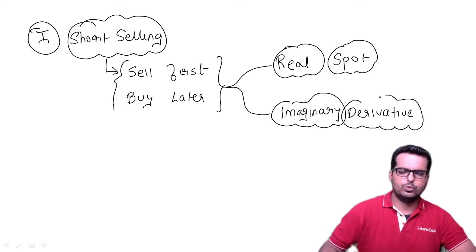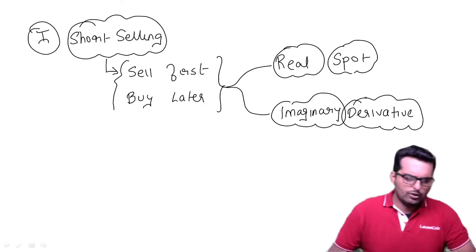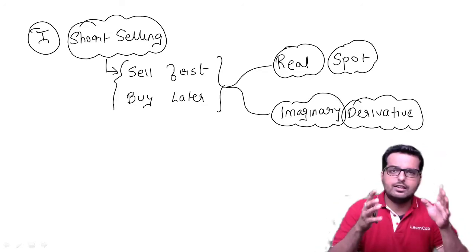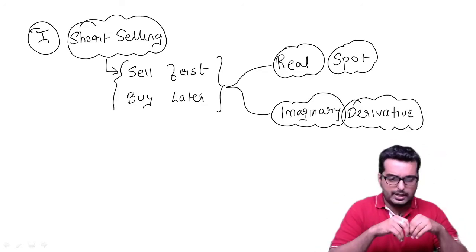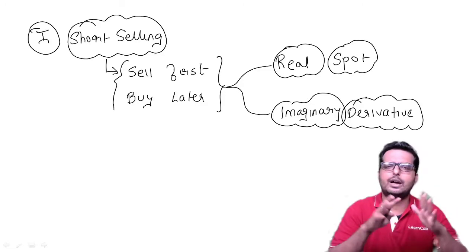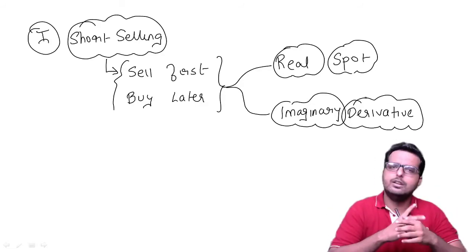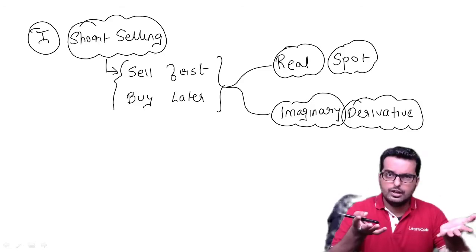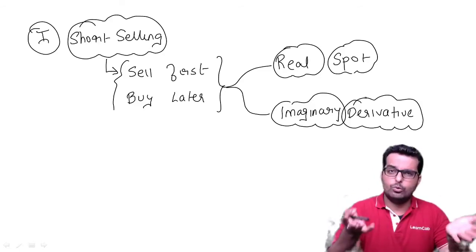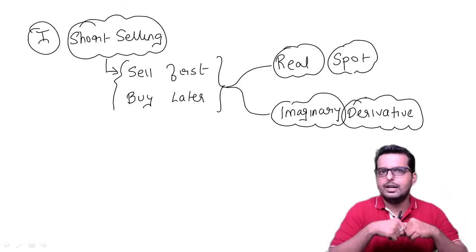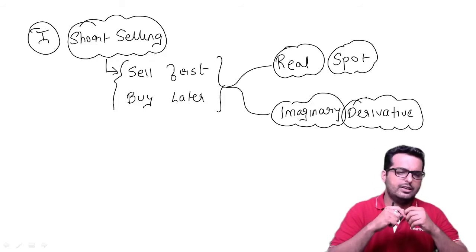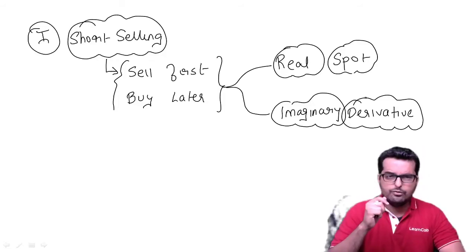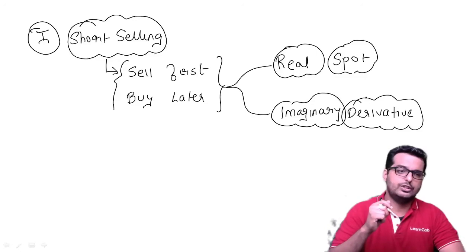The derivative market is actually a paper market. So when it is a paper market, you only click — actual delivery doesn't take place. So there you can sell first and buy later, no problem at all. But in the real market, is it possible to sell a share first without even owning it and then buy it back? That is not practical, but it is possible using a simple technique.